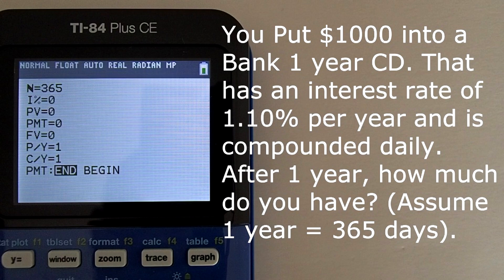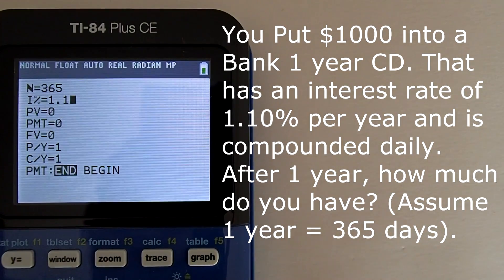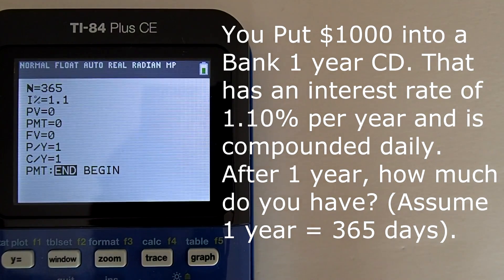For I percent, the annual interest rate, or APR, is 1.1%. So enter 1.1. Remember, do not convert this percentage into a decimal number. Just enter 1.1.